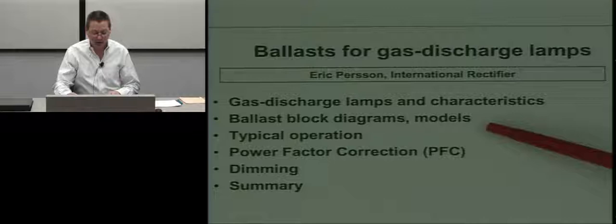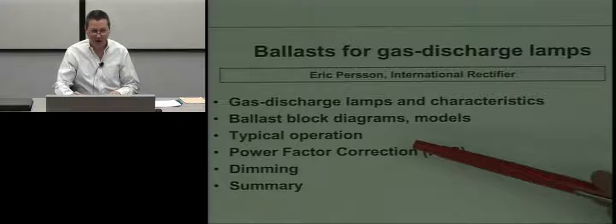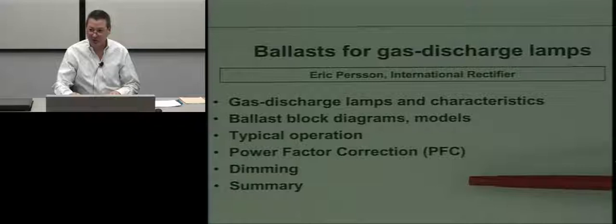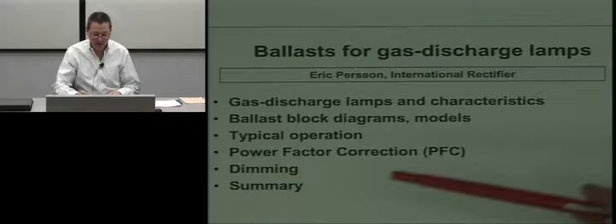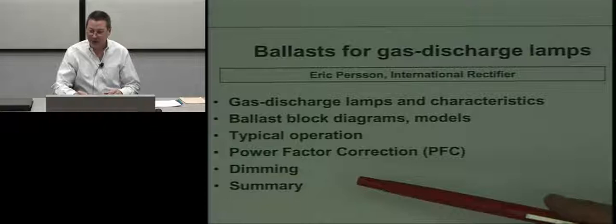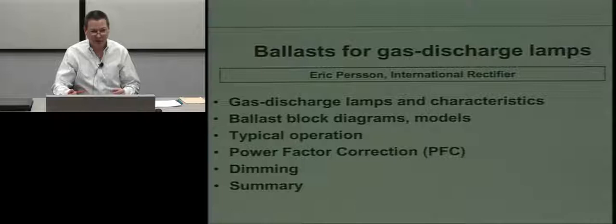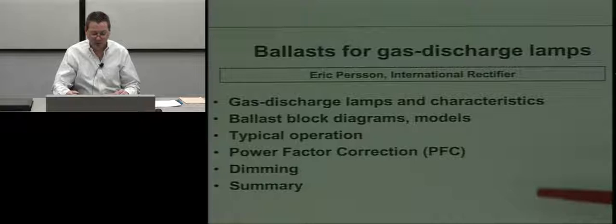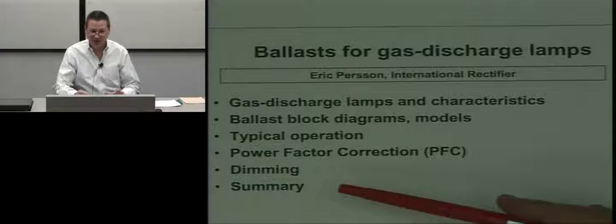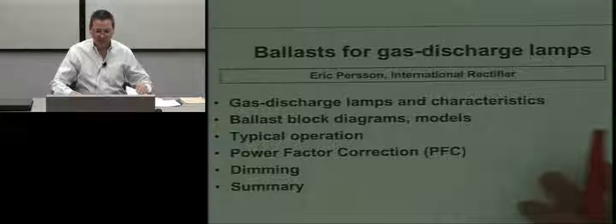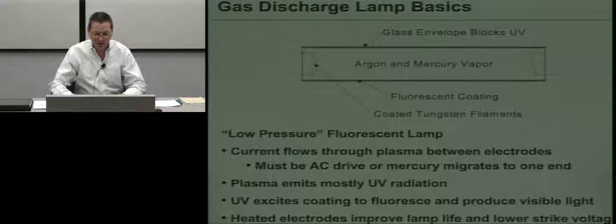I'll look at some simplified models of the output circuit and go through typical operation, because it isn't necessarily just on/off — there are warm-up times and preheats to take into account. I'll talk about power factor correction, which depending on what country and power level you're in may or may not be required. I'll also cover dimming capability, which helps improve energy efficiency. For example, in a large store with skylights, you can supplement with a little extra light during the daytime and run at full power at night, getting system-wide energy savings.